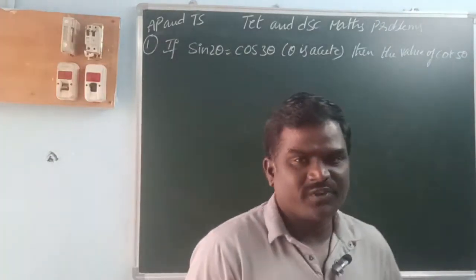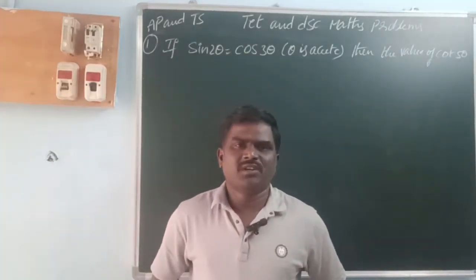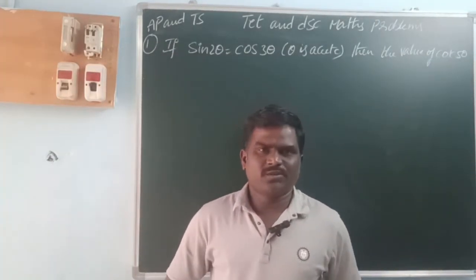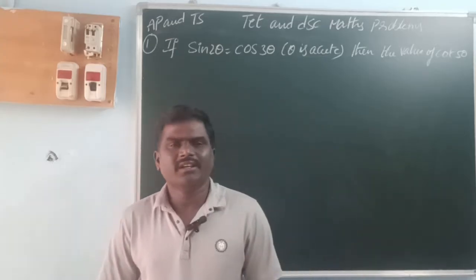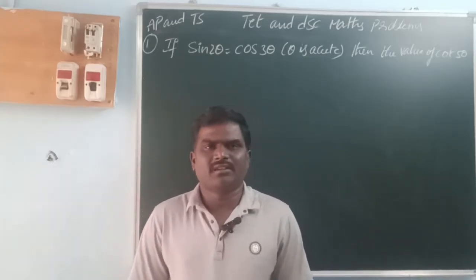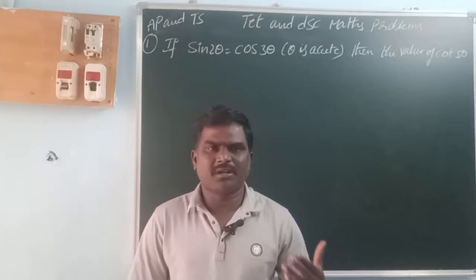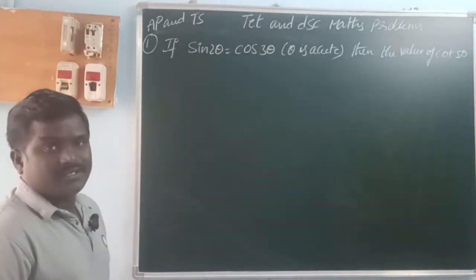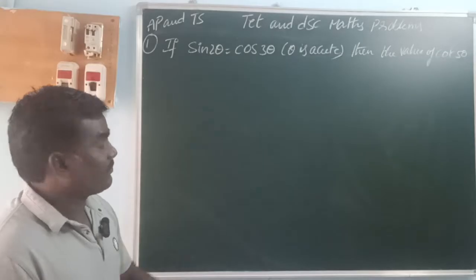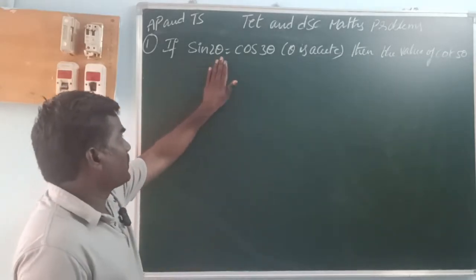Hello friends. Here we are going to discuss some previous problems from DSC mass exam. So the first one is from geometry: if sin 2θ is equal to cos 3θ and θ is acute, then find the value of cot θ.